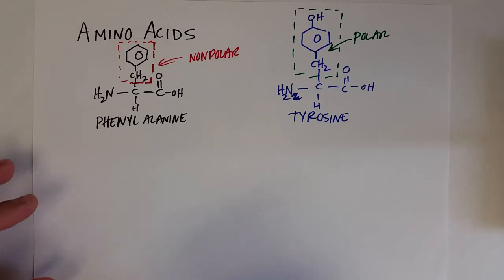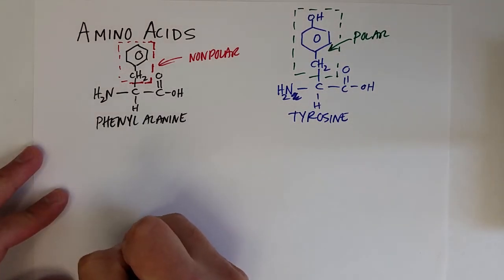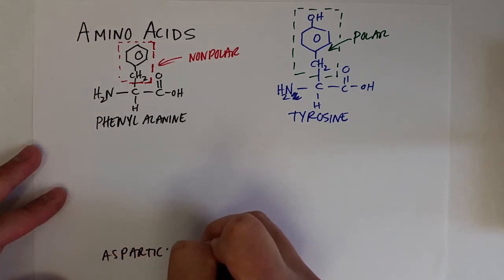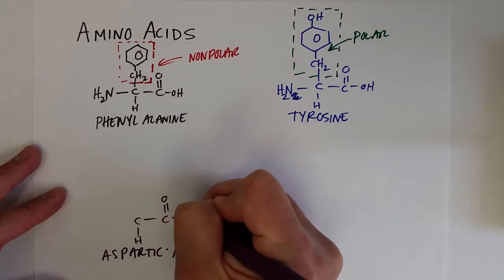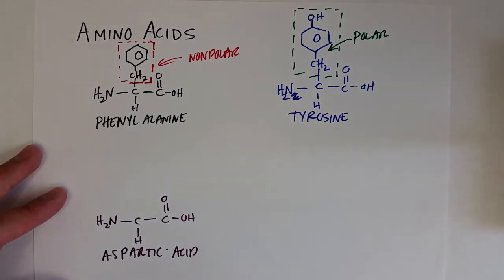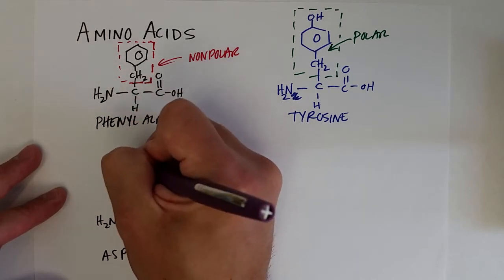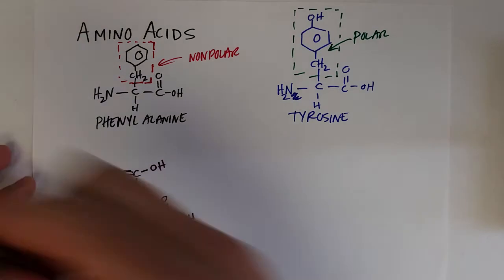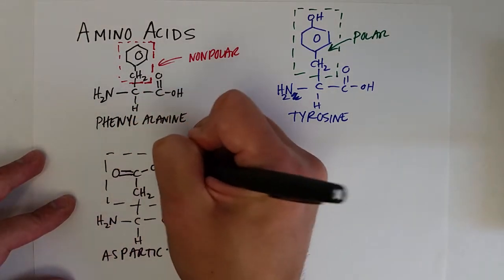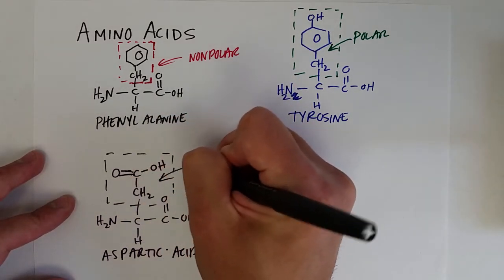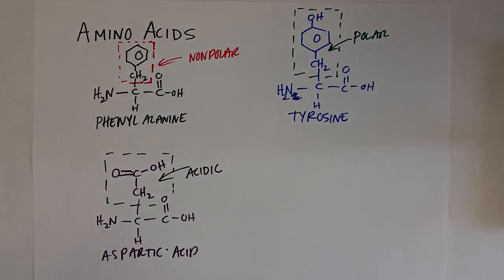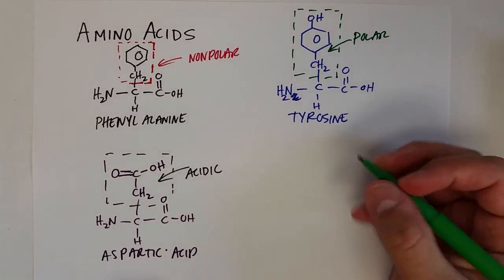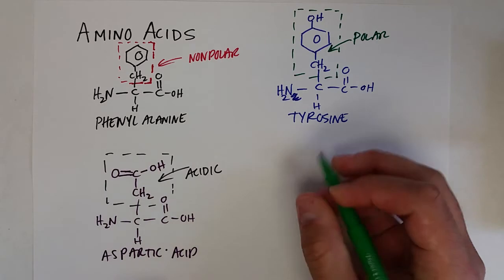You can also have an acidic side chain. An example of that is aspartic acid, which starts with a CH2 group connected to a carboxylic acid — that is an acidic side chain, making it an acidic amino acid. There is only one other acidic amino acid, and that is glutamic acid. So the amino acids with acidic side chains are aspartic acid and glutamic acid.